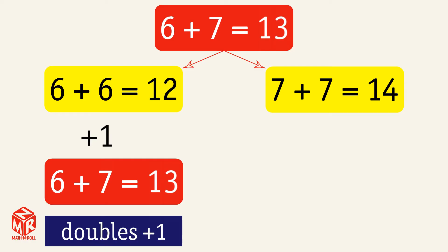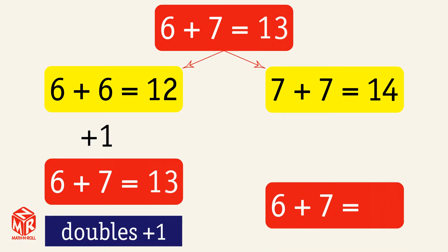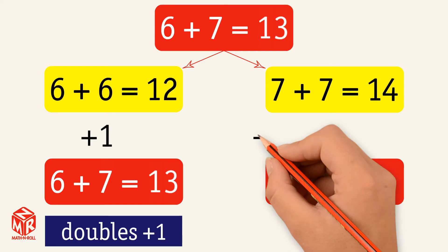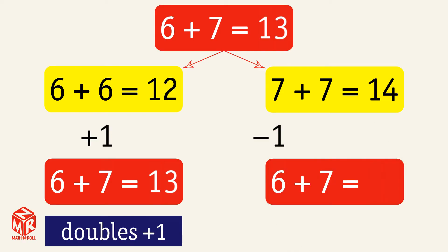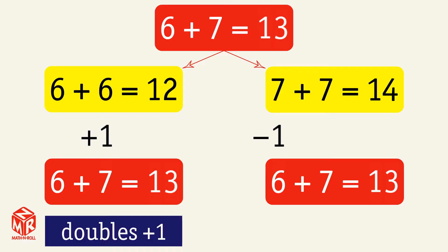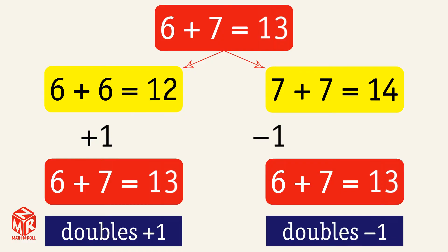Now let's solve 6 plus 7 using the doubles fact 7 plus 7 equals 14. We need 6 plus 7, which is one less, so we subtract 1 from the doubles fact, and we get 14 minus 1, which equals 13. So 6 plus 7 equals 13. This is the doubles minus 1 strategy.